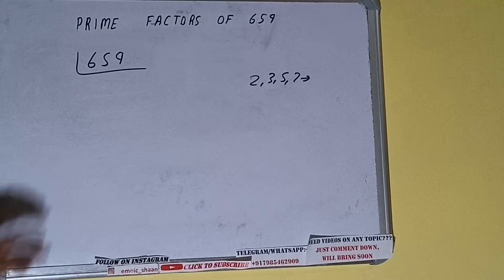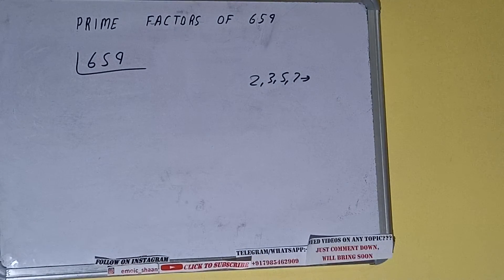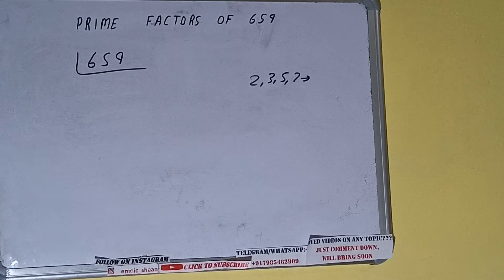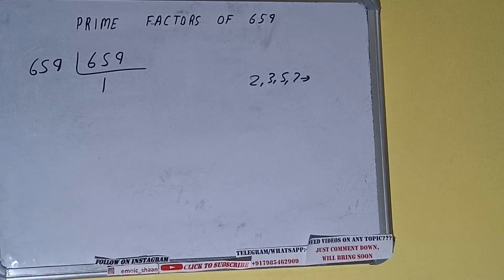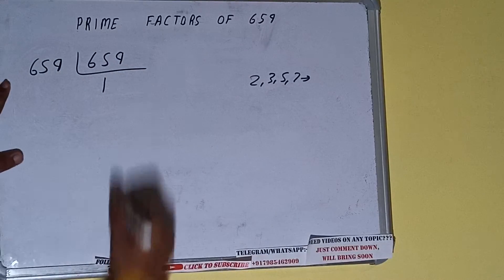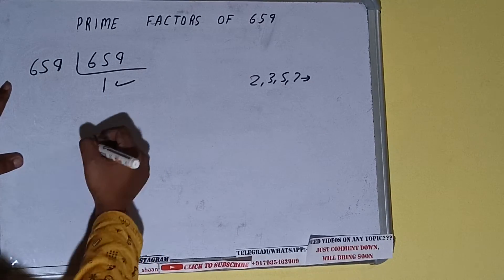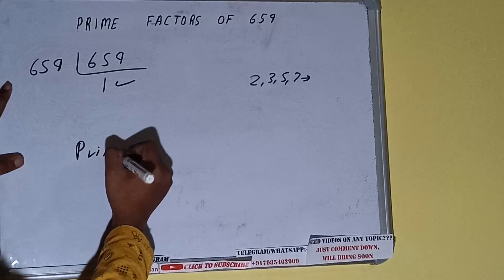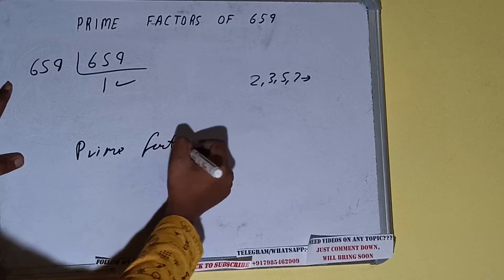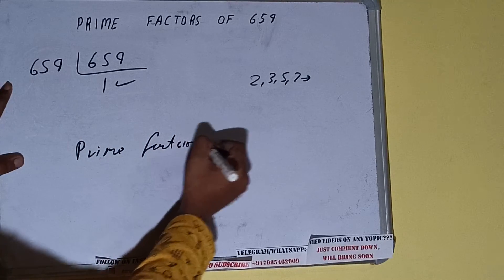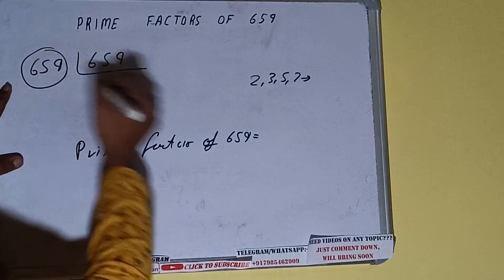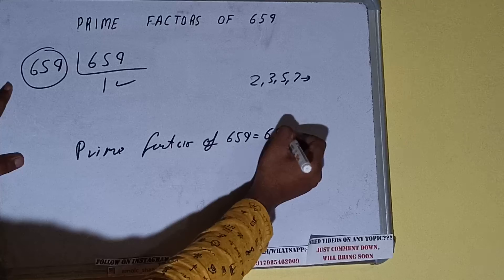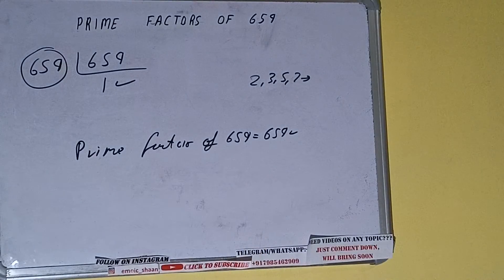If we talk about the number 659, the number 659 is also a prime number. So it is only divisible by itself — that is 659 — and once we do so we'll be getting 1. Once we get 1 we need to stop. The prime factors of 659 equals whatever is on the left hand side, that is 659, and that will be our answer.